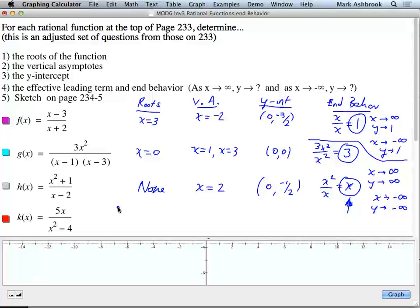Elizabeth, roots. This is a difference of squares. What are the vertical asymptotes, Elizabeth? 2 and negative 2. Y-intercept? What happens when we have a root at 0? It's also the y-intercept.